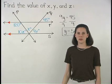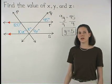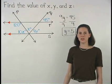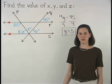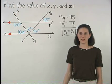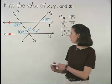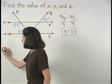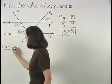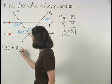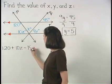And since we know that if two parallel lines are cut by a transversal, then same side interior angles are supplementary, we can set up the equation 120 plus 10z equals 180.